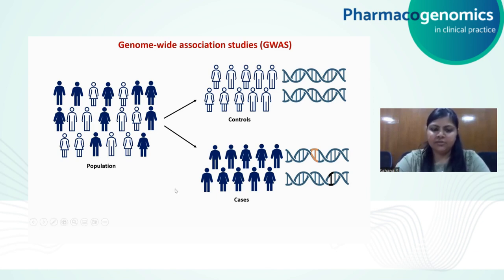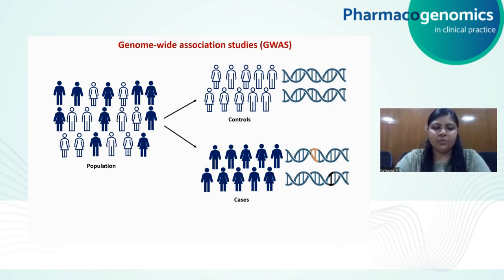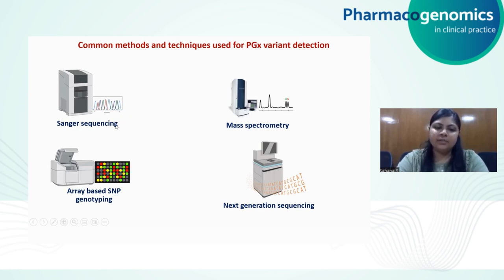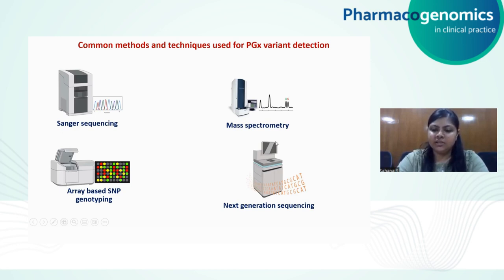These types of studies are known as genome-wide association studies, which can be undertaken to understand the common polymorphisms involved in pharmacogenetic responses in a population. There are now several methods and techniques that can be used to perform genetic testing or GWAS studies for the detection of PGX variations. Examples of such techniques include Sanger sequencing, mass spectrometry-based genotyping, array-based genotyping, and next generation sequencing. We will be talking about each technique and the principle behind them in further slides.